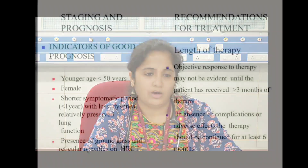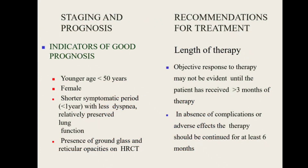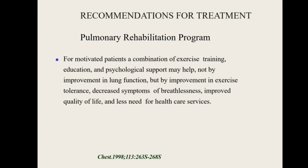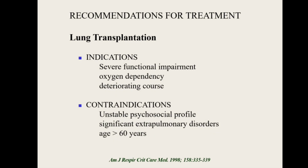Prognosis is better with younger age, female sex, and shorter symptomatic period — indicating ILD was picked up early. Ground-glass opacity on HRCT indicates active inflammation without established fibrosis, which is treatable. Treatment takes more than three months to show improvement; in the absence of complications, continue up to six months with regular follow-up. Pulmonary rehabilitation improves exercise capacity. Lung transplantation is the last resort for patients deteriorating rapidly with severe functional impairment requiring oxygen.